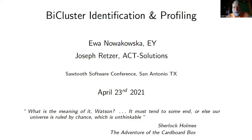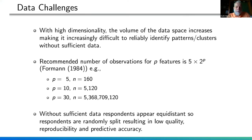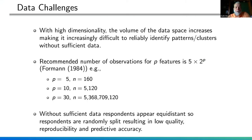This paper sets the stage for why they did it: when clients come to you with a large number of variables for a segmentation study, there's a serious dimensionality problem. Joe showed a nice summary of past research: the recommended number of observations for p features is five times two to the p. Five variables requires 160 respondents; 10 variables requires 5,000; 30 variables requires five billion — you'd need to interview a majority of the human race. This is handy when a client wants segmentation with 250 variables — you can show them why that's problematic.